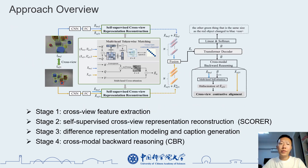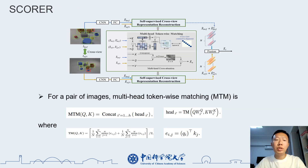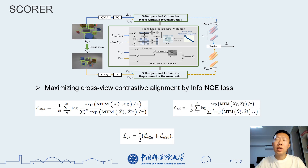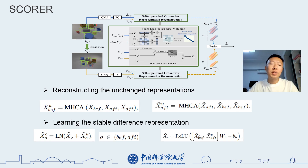Here is our approach overview, which consists of four stages. Given two images, SCORE first uses an MTM to fully interact cross-view features, which is implemented by the following equations. Second, SCORE learns to filter invariant representations by maximizing cross-view contrastive elements via info-NCE loss. Next, SCORE reconstructs the unchanged representations to learn a stable difference representation for caption generation.